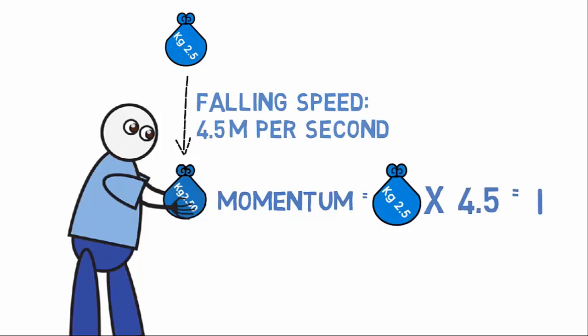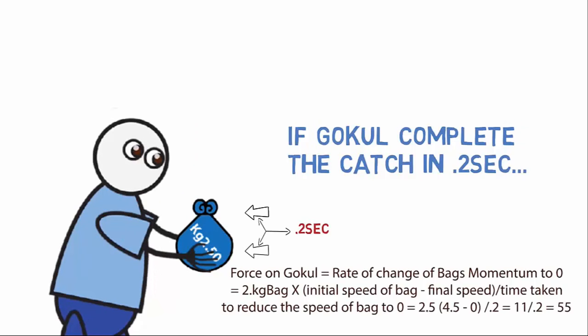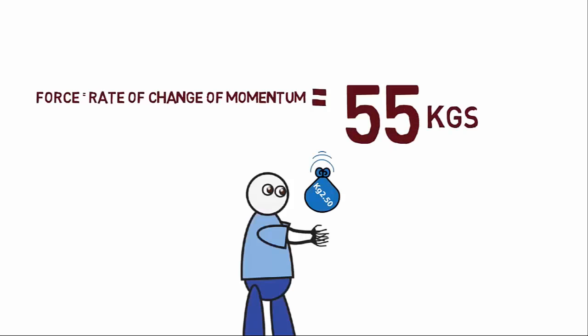And let's say Gokul completes the catch in 0.2 seconds. So the momentum of the bag of 11 has to be brought down to 0 in 0.2 seconds, and so the rate of change of momentum is 55. Now, force is the rate of change of momentum, and so this additional 55 kg is what Gokul experiences when he catches the bag.